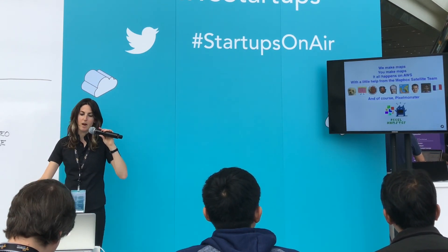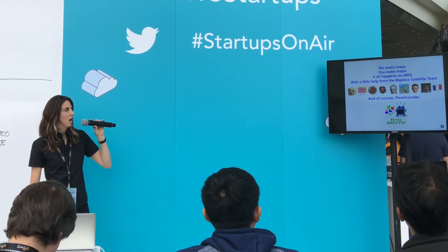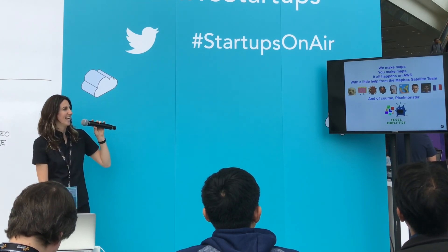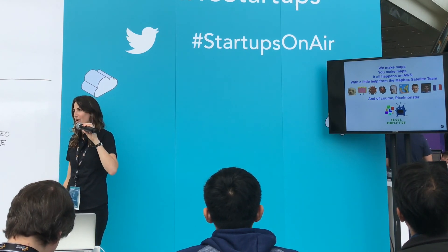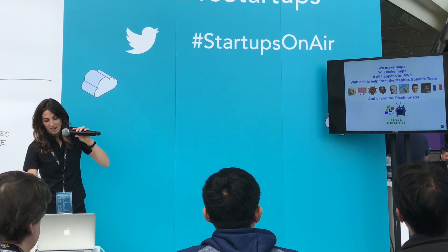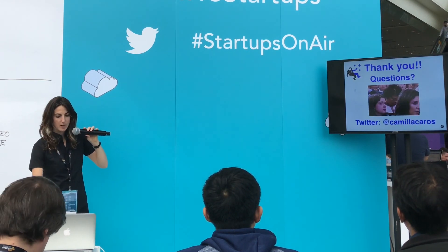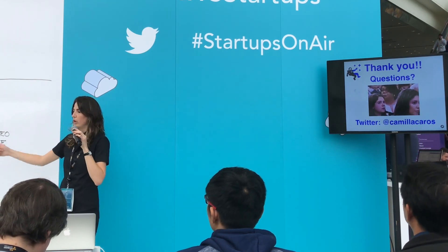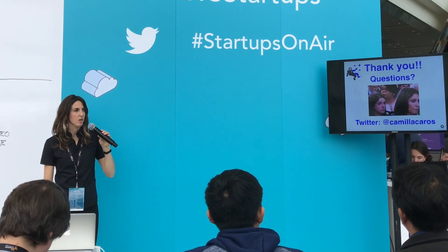Just to round up: we make maps, and we help you make maps. This all happens on AWS. On the imagery side, you get a little help from the Mapbox Satellite team and Pixelmonster — that's our name for our backend processing engine and our little mascot. Thank you so much. If anybody has any questions, I'm here. I'll be at the desk around the corner for the next two hours, I'm here till two. Thank you all so much.